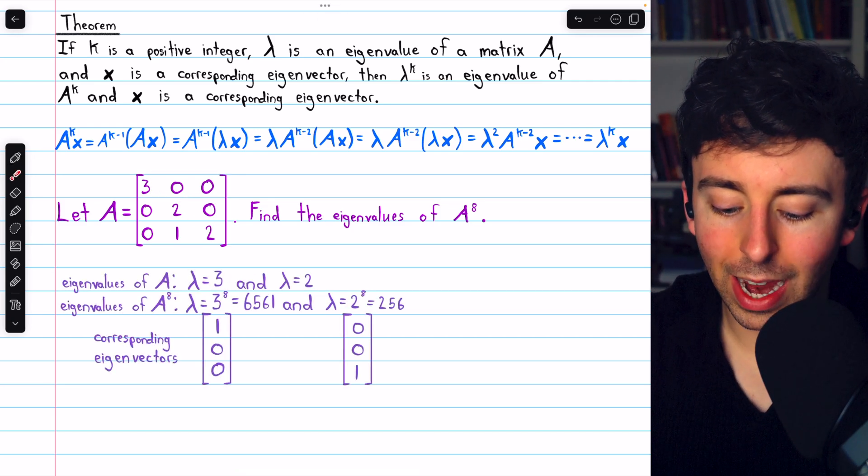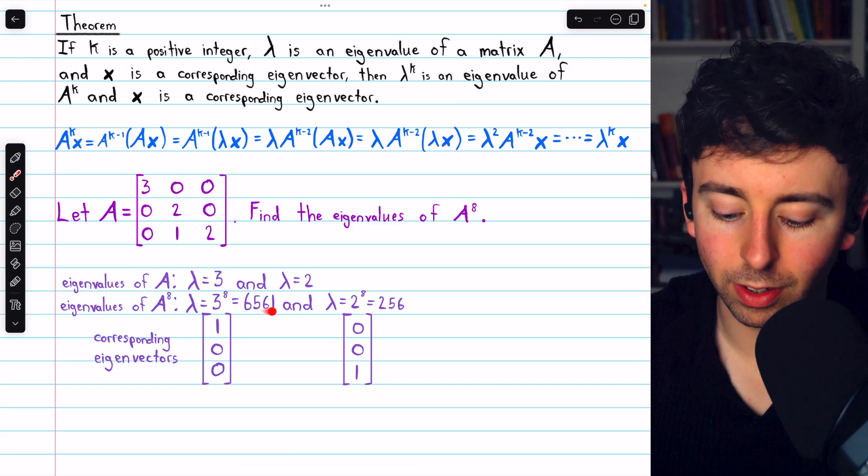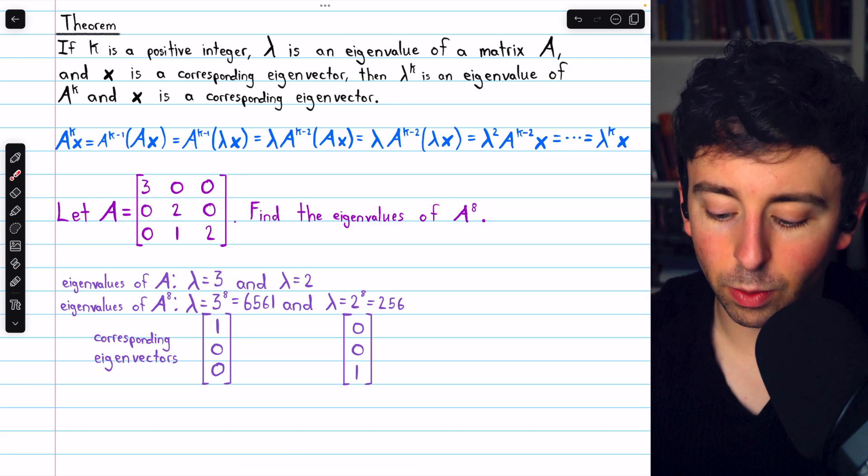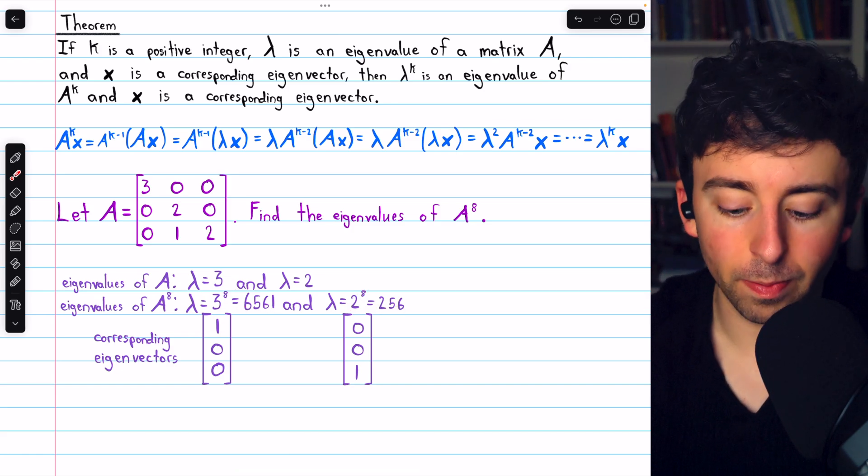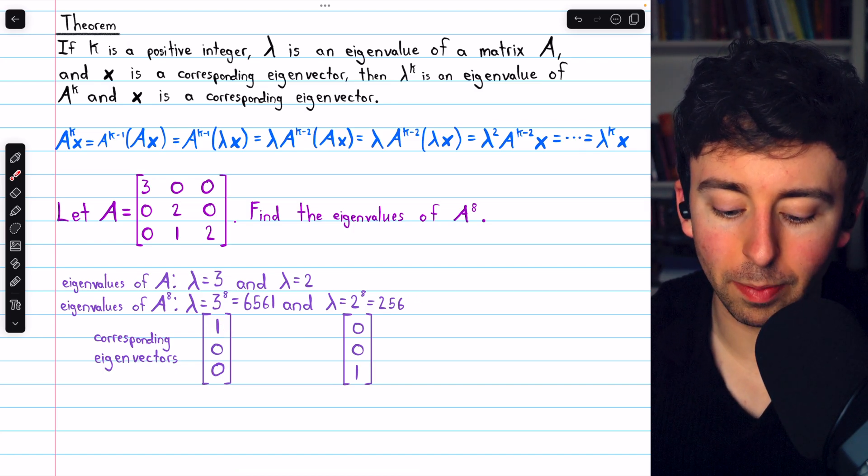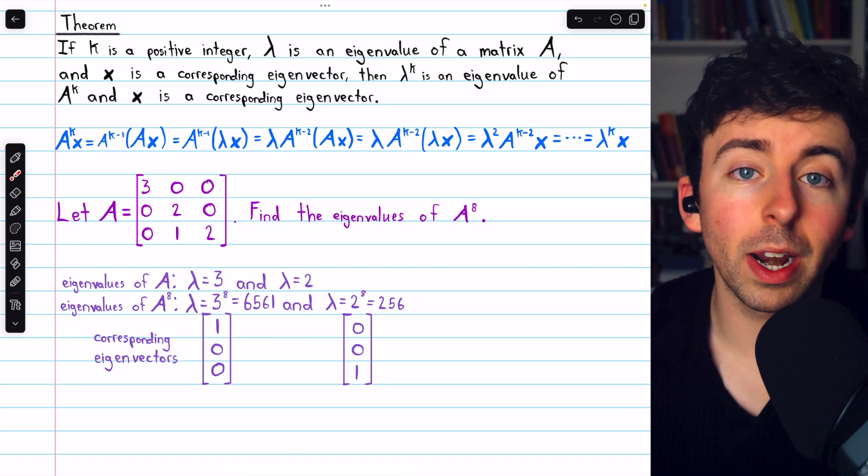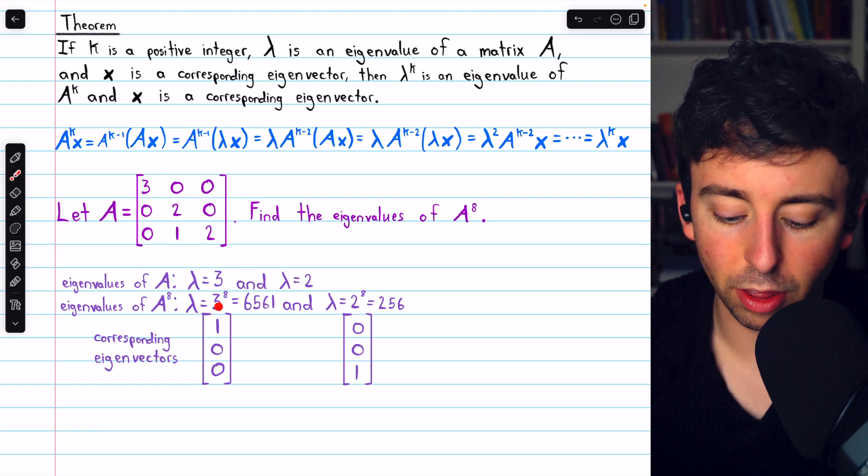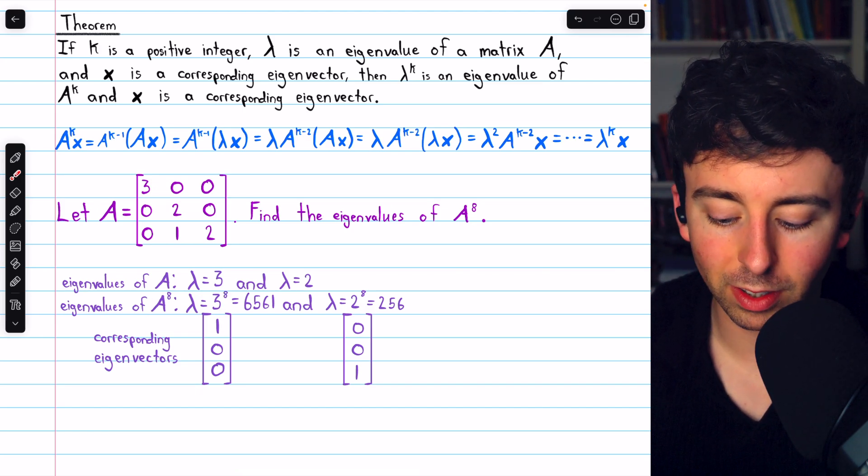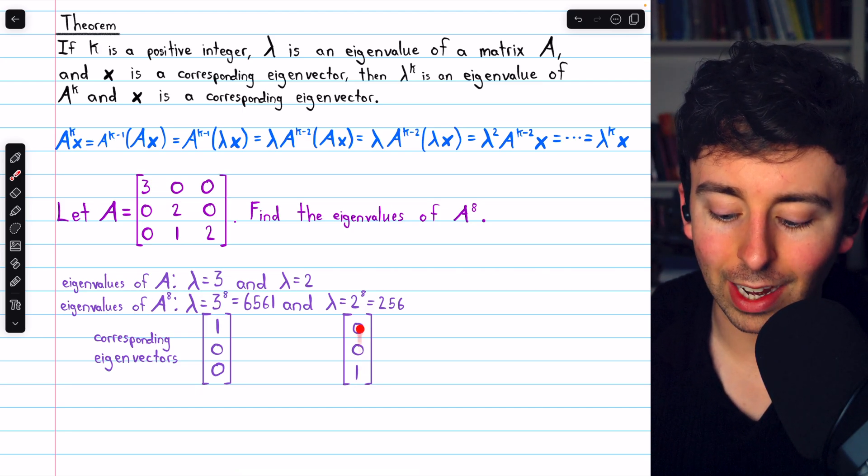Also, this is the eigenvector corresponding to lambda equals 3. And so it's also an eigenvector corresponding to 3 to the 8 for this matrix, similarly for this eigenvector here.